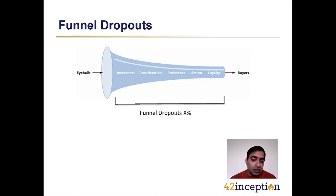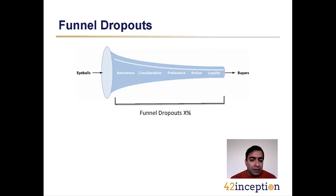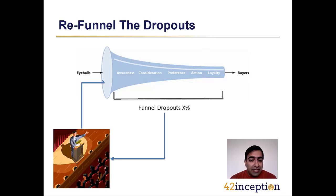Another major advantage where audience aggregation plays a key role is getting dropouts back into the funnel. As marketers, we are all aware of the marketing funnel — you start by getting user eyeballs, move people ahead, get them aware of the products and services you have, and then make sure they are really considering your products. The critical element here is that no matter the kind of funnel you have, at every stage there will be dropouts. The main concern is: how are you treating those dropouts?